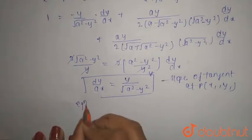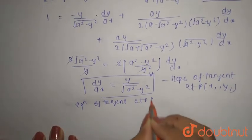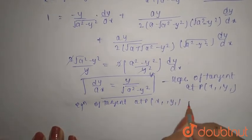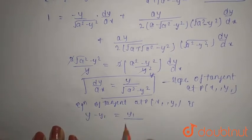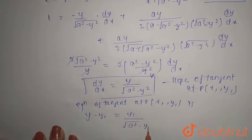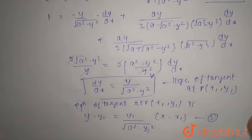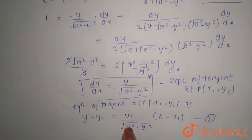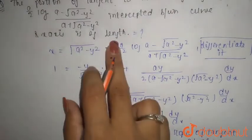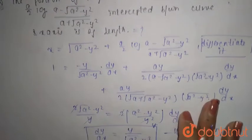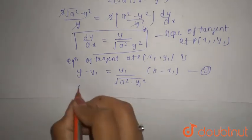Now we have the slope, so we find the equation of tangent at point P(x₁, y₁): Y minus y₁ equals (y₁ over root(a² - y₁²)) times (x minus x₁). That is equation 2. Now substituting y = 0, since we need the intercept between the curve and the x-axis, y will be 0.